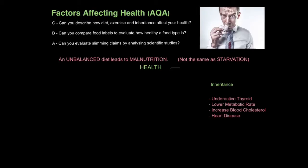Finally, some factors are actually inherited — in other words, they're encoded in your genes. One example of this is having an underactive thyroid gland, located in your throat region. If you have an underactive thyroid gland, it will lower your metabolic rate, which can lead to obesity. Also, some people are born with an increased blood cholesterol, which has been linked to an increased risk of developing heart disease.